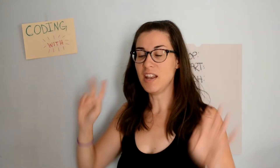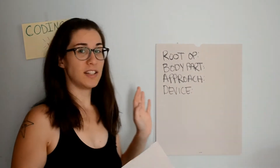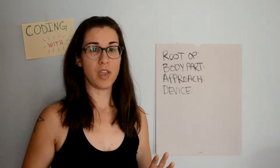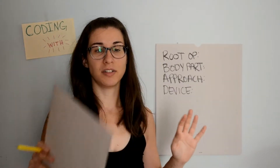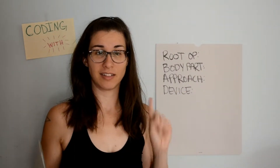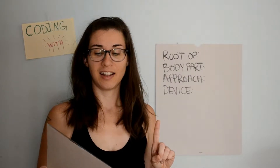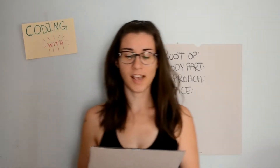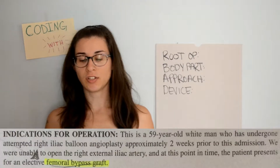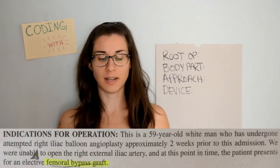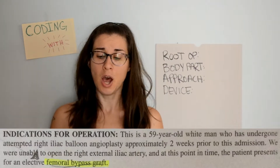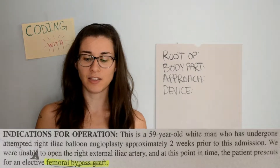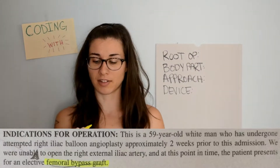Hey everyone, on this episode of Coding with Kate we are going to dissect another op report. We are in a different body system — this one is cardiovascular, so we are talking about arteries, veins, etc. It looks like it's a femoral artery bypass. Our indications for the operation say this is a 59-year-old white man who has undergone attempted right iliac balloon angioplasty approximately two weeks prior to this admission. They were unable to open the right external iliac artery, and the patient presents for an elective femoral bypass graft.